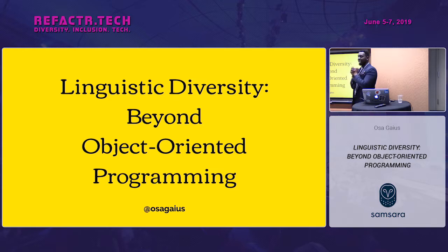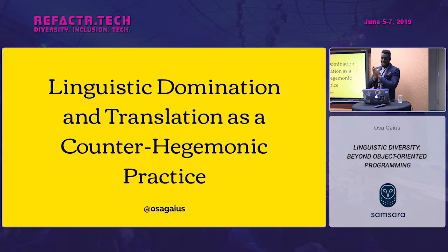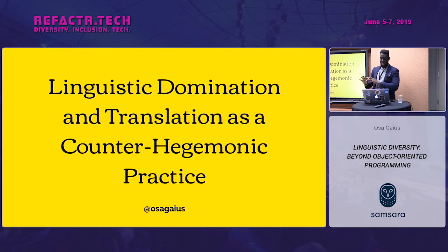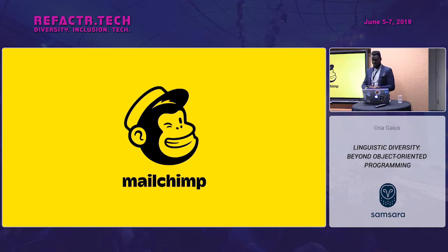Today's talk is called 'Linguistic Diversity Beyond Object-Oriented Programming.' This is a version of a talk I gave at ElixirConf as the keynote, which was originally titled 'Linguistic Domination and Translation as Counter-Hegemonic Practice' — a very long title. I could also simplify this to 'What Comes After Java,' or 'Screw Java,' or 'Java Is Not Great,' but this is the intellectual way my professors told me I should say things.